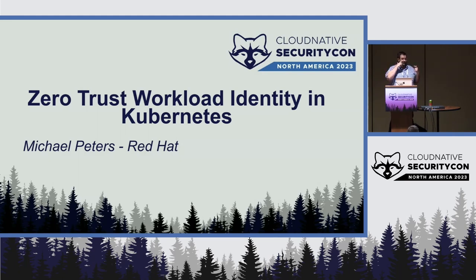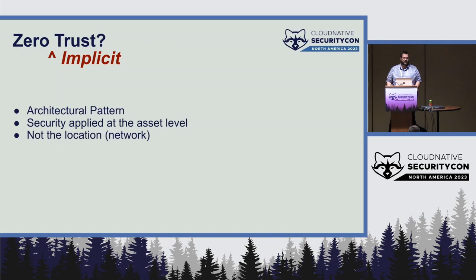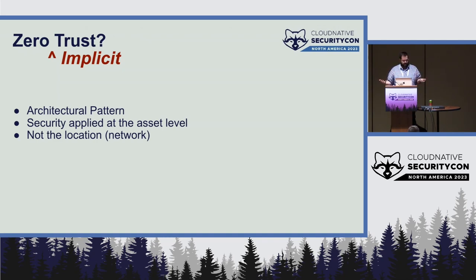I'm going to make some assumptions as we go — if those prove incorrect, just wave your hand. So talking about Zero Trust, it's kind of a misnomer. Zero Trust actually means Zero Implicit Trust. When we're talking about Zero Trust, you can't have zero trust — you have to trust something. But what we're saying is we don't trust things just by where they are on the network. It's an architectural pattern where we apply security at the asset level, not the location level.